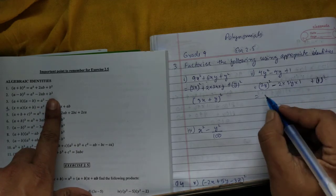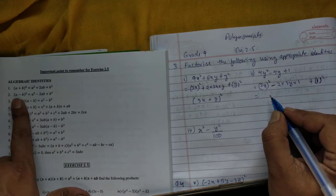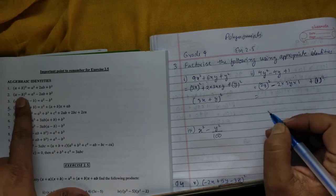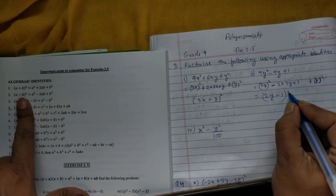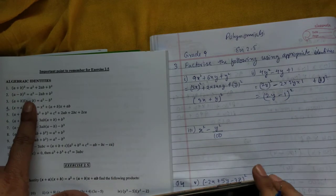which is (A - B)². So we write (2y - 1)². For the next problem, we have only two terms and both are perfect squares, so we use